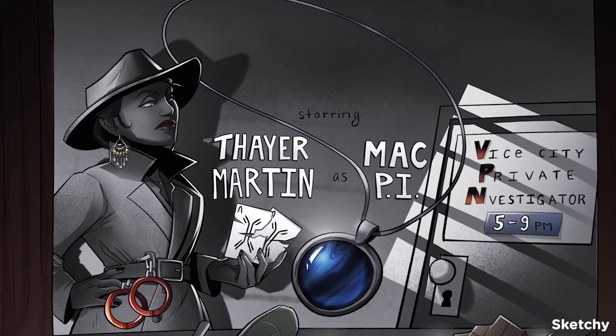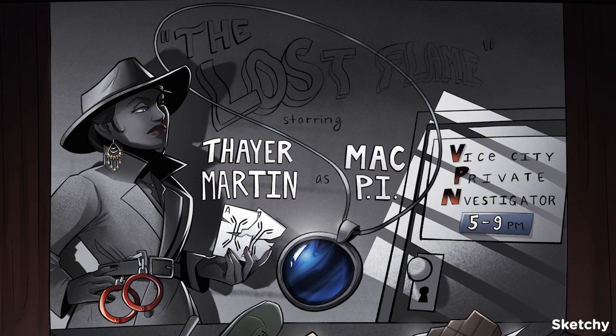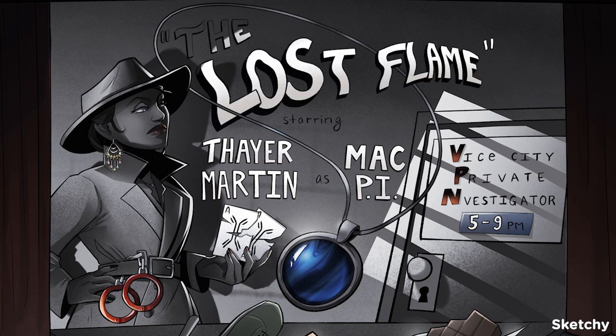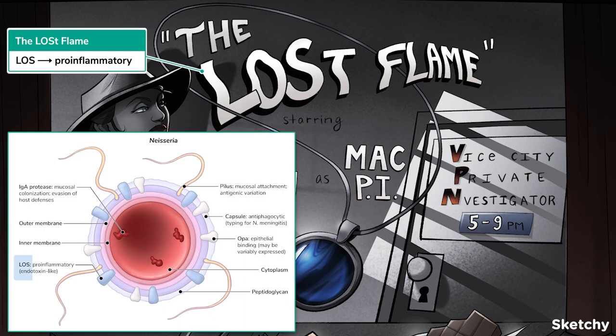Finally we get to the title of our feature, which is the Lost Flame. The L-O-S in Lost stands for lipo-oligosaccharides. It's a super-inflammatory compound made by Neisseria, and it's similar to endotoxin found on other gram-negative bacterial species. It's an important virulence factor because it revs up the pro-inflammatory state and makes the immune system run wild and causes a lot of destruction. In the next videos, you'll see that LOS is a big reason why folks get really sick from Neisseria bacteremia.